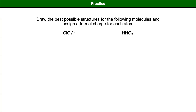One more for extra practice: let's do chlorate, ClO₃⁻. Count your electrons, figure out what goes in the middle, and get those formal charges close to zero.